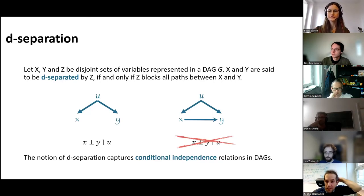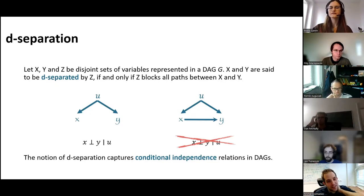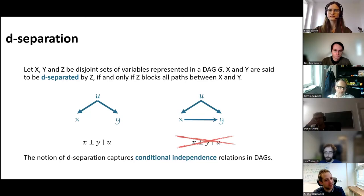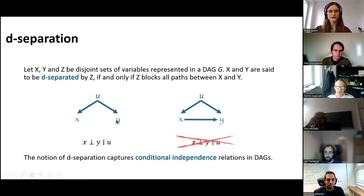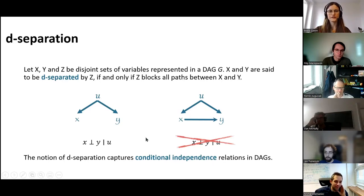A question from the audience: does d-separation imply conditional independence in the sense that the joint distribution factorizes? Yes—so if U d-separates X and Y, then the probability distribution of X and Y given U equals the probability distribution of X given U times the probability distribution of Y. So it basically factorizes.